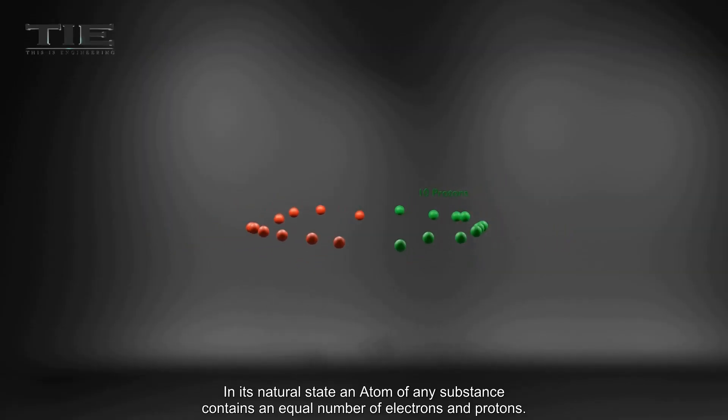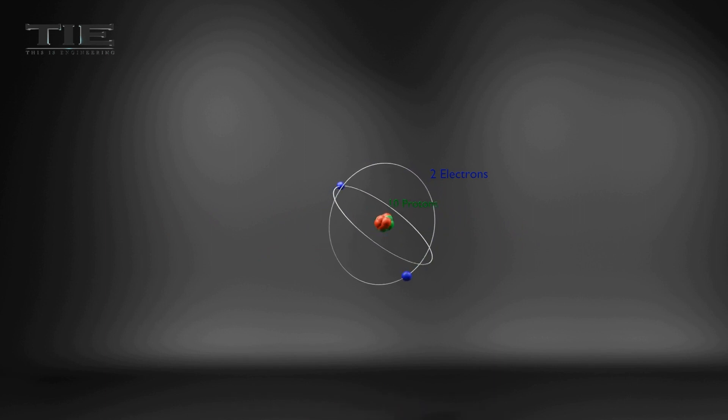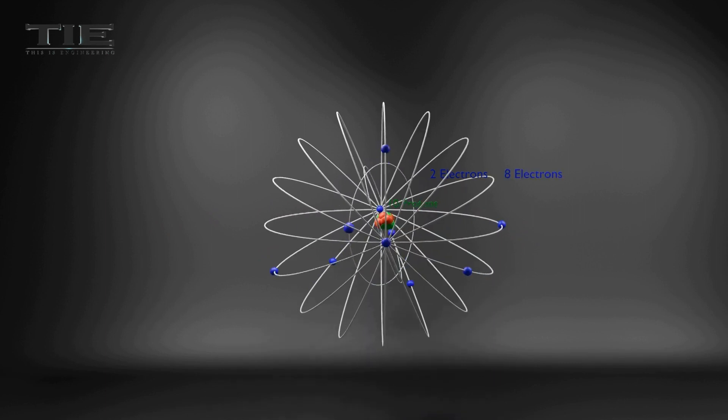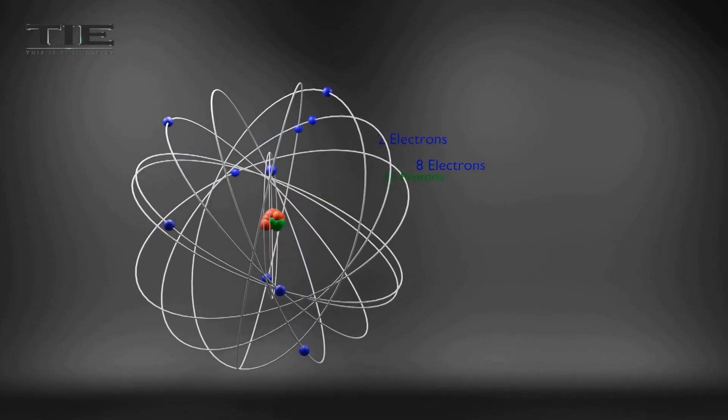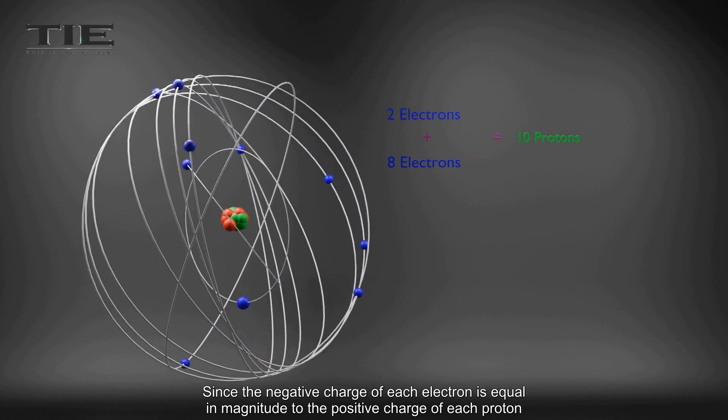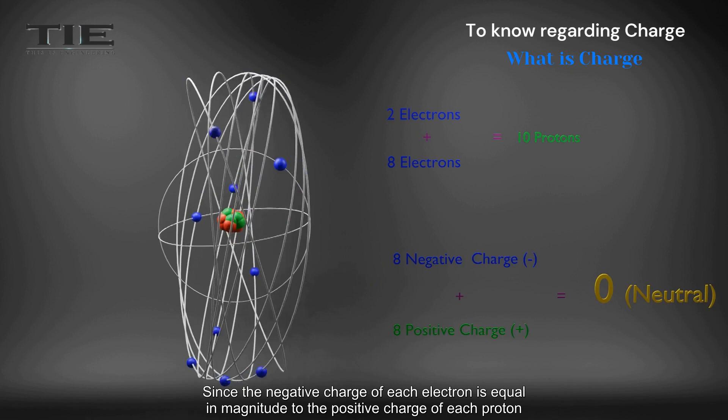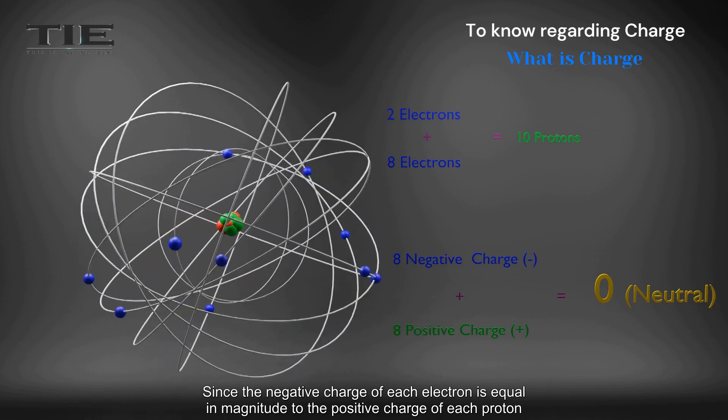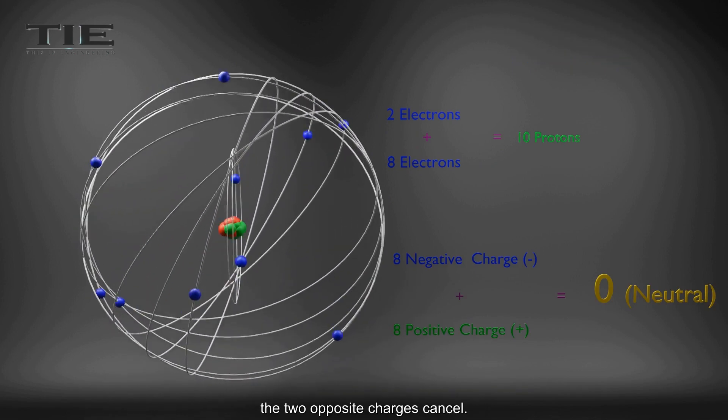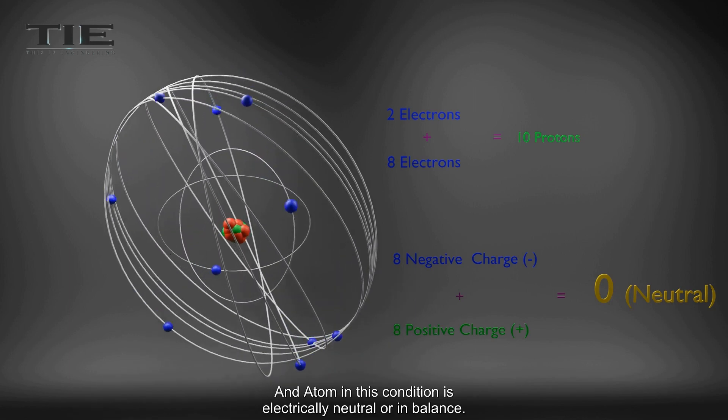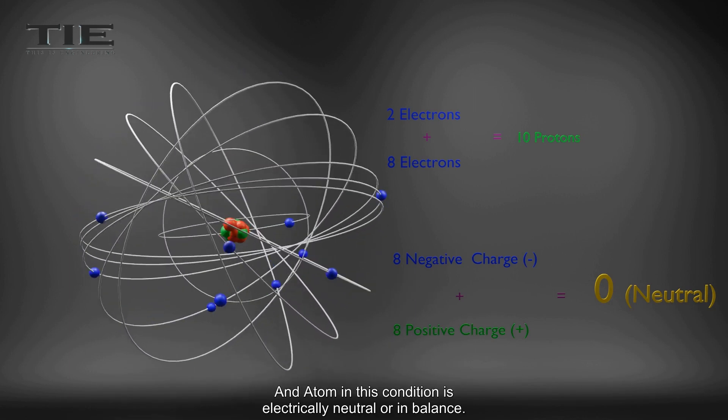In its natural state, an atom of any substance contains an equal number of electrons and protons. Since the negative charge of each electron is equal in magnitude to the positive charge of each proton, the two opposite charges cancel. An atom in this condition is electrically neutral, or in balance.